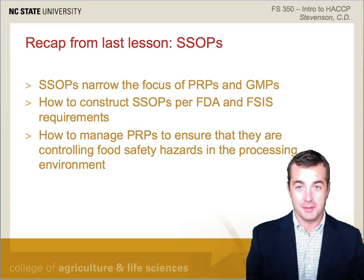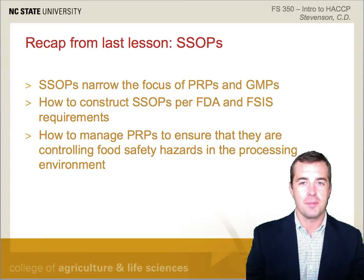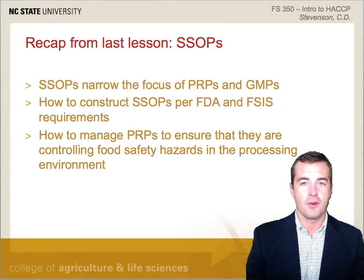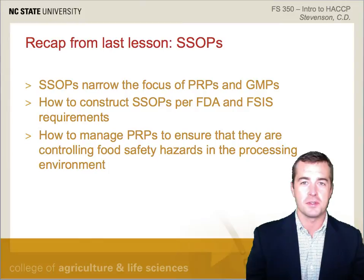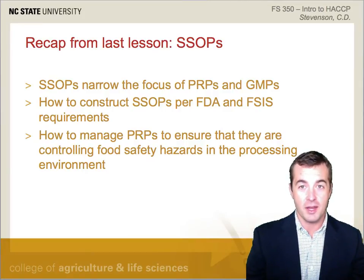In the previous lessons we discussed how prerequisite programs should be used to control food safety hazards that occur in the processing environment. Successful implementation of GMPs ensures clean and acceptable operating conditions in the environment, and these are listed as sanitation performance standards by the FSIS. Examples of such conditions include ventilation, water supply, and sewage disposal. We also discussed how SSOPs narrow this focus by requiring monitoring and record-keeping actions to ensure conformance to standards for conditions such as cleanliness of food contact surfaces.